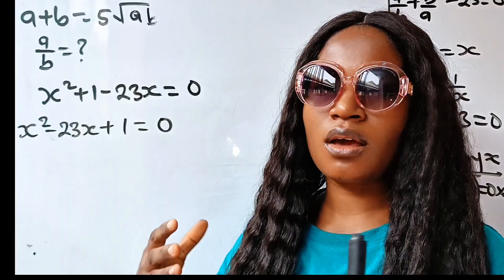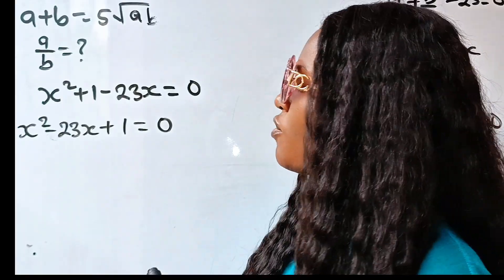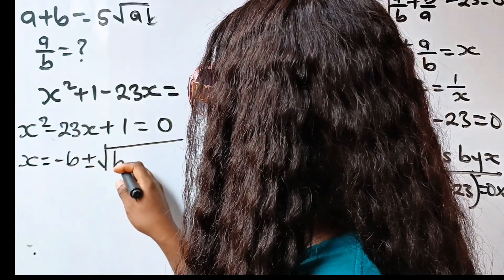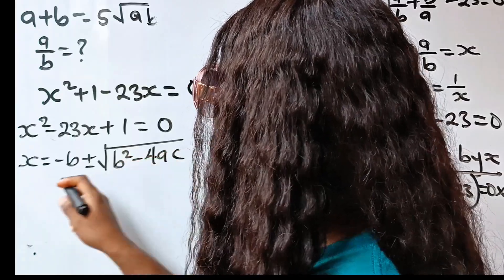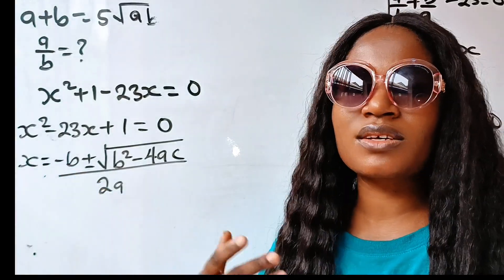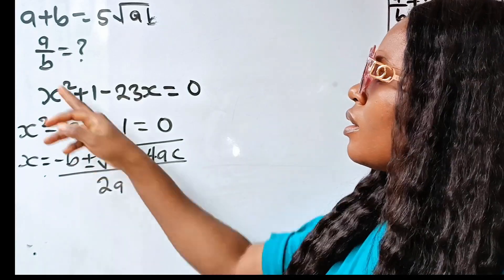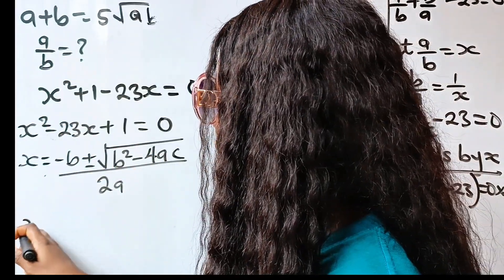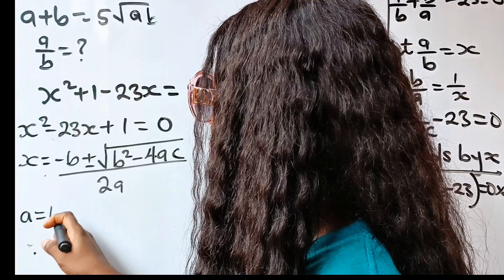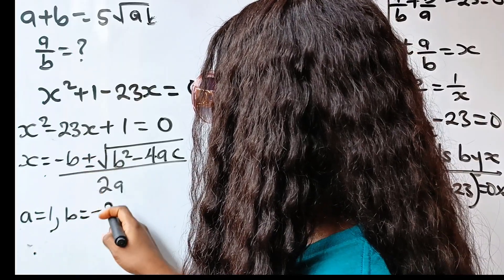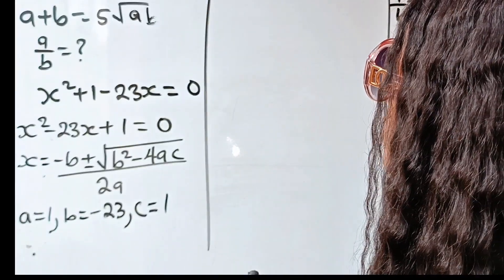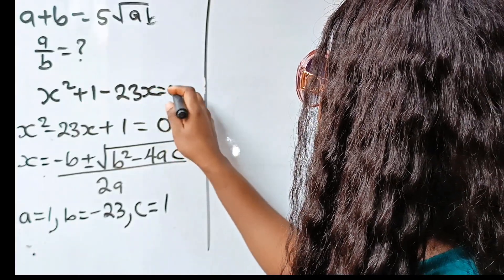Now let's solve this using the quadratic formula. X equals negative B plus or minus square root of B squared minus 4AC, all divided by 2A. Our A is the coefficient of X squared, which is 1. Our B is the coefficient of X, which is minus 23. And our C is the constant, which is plus 1.